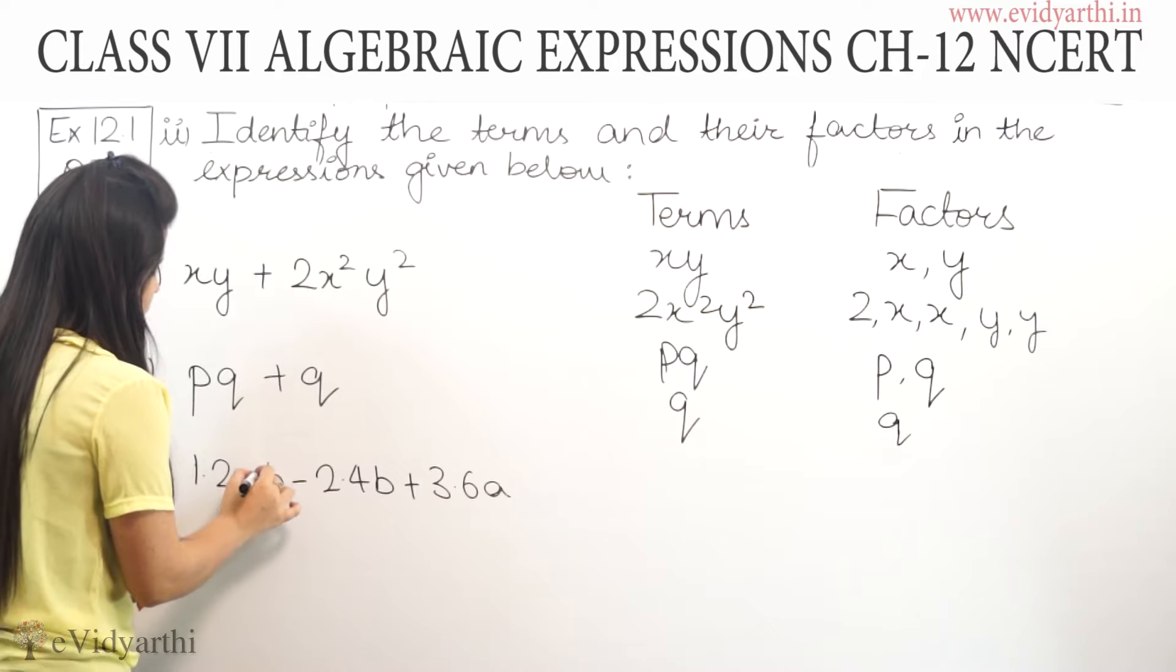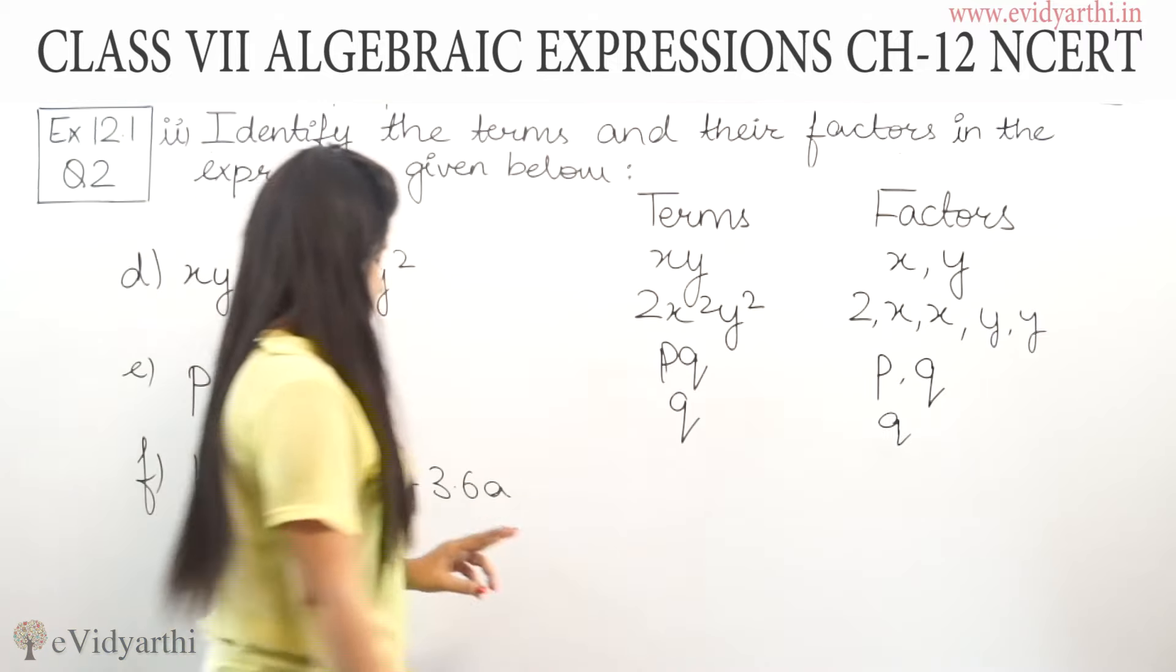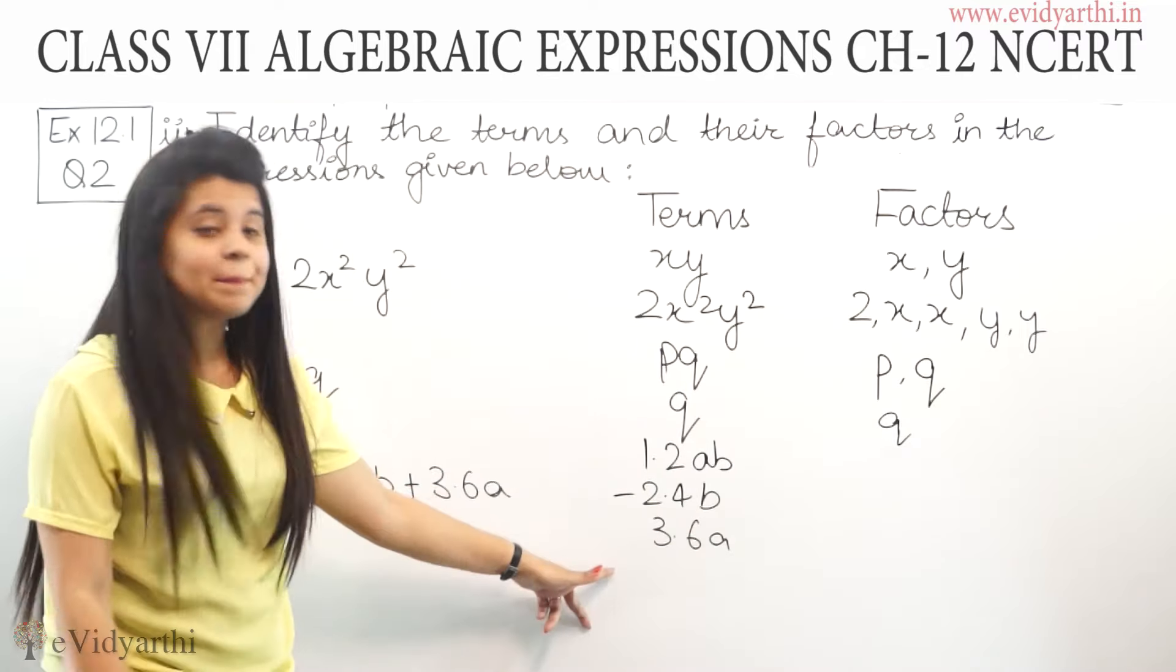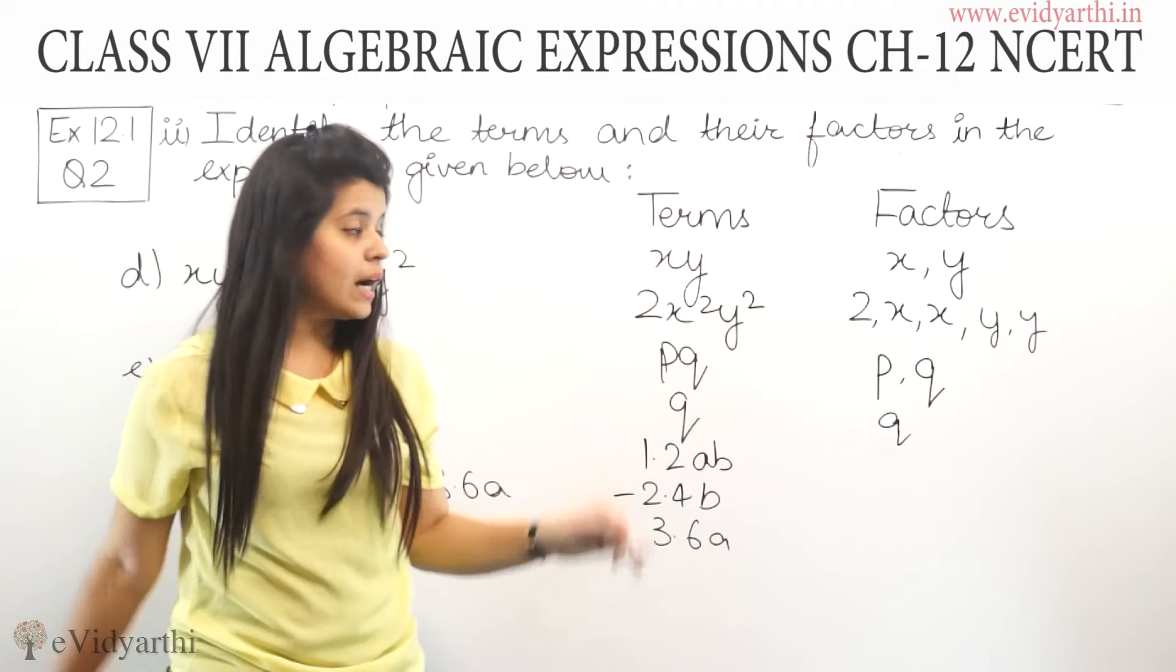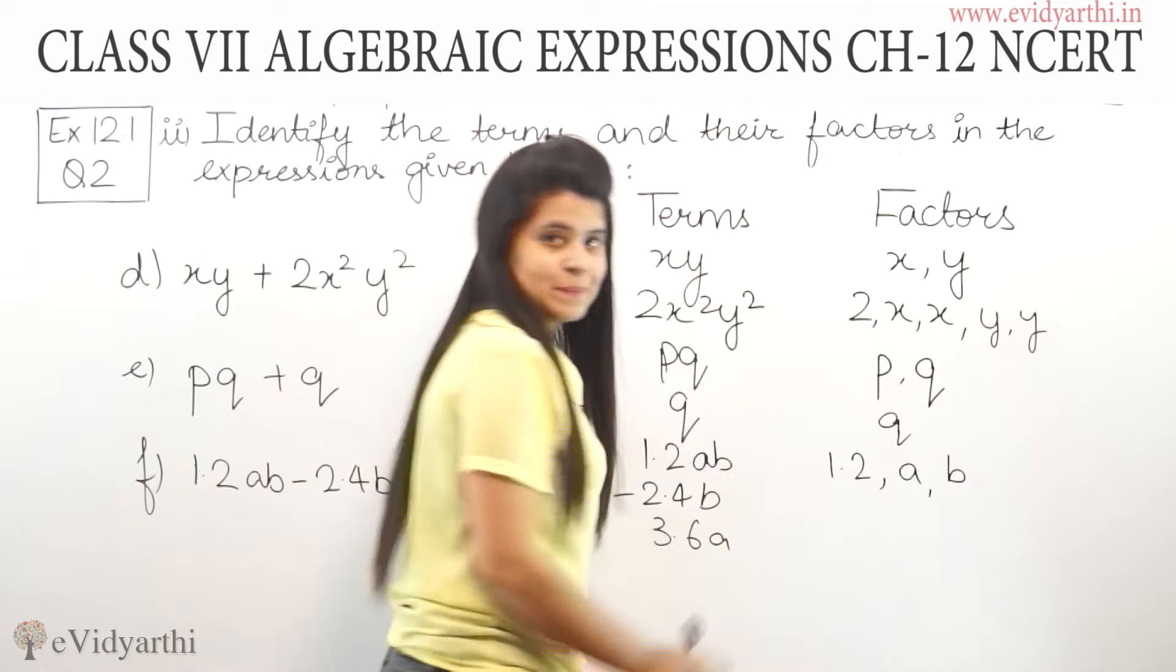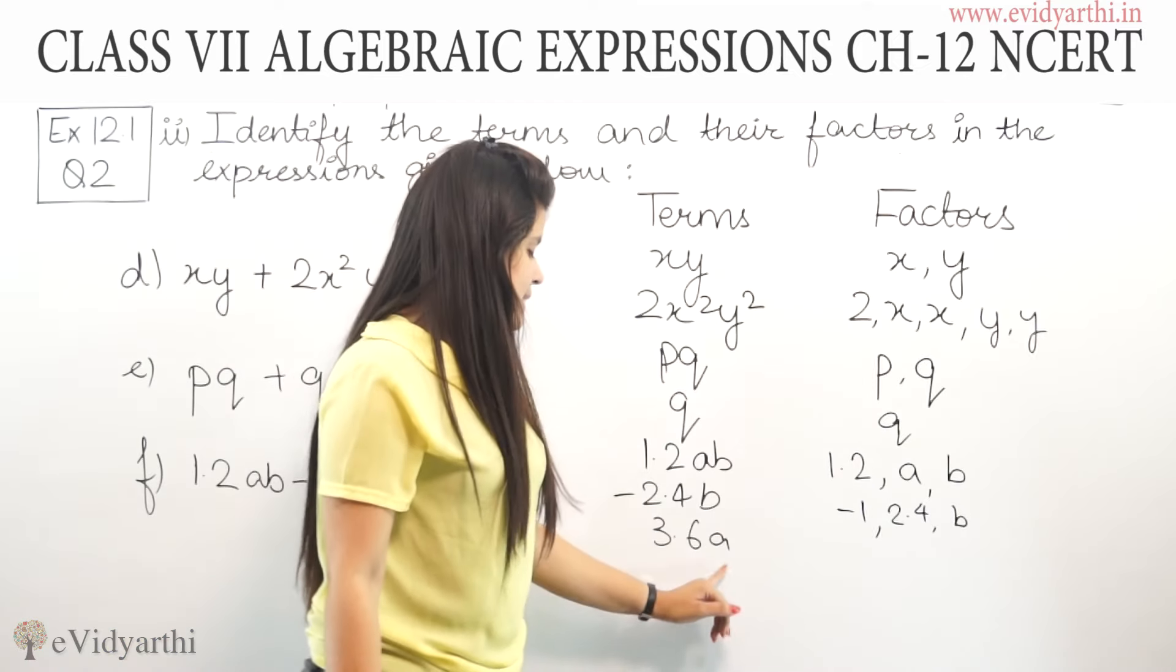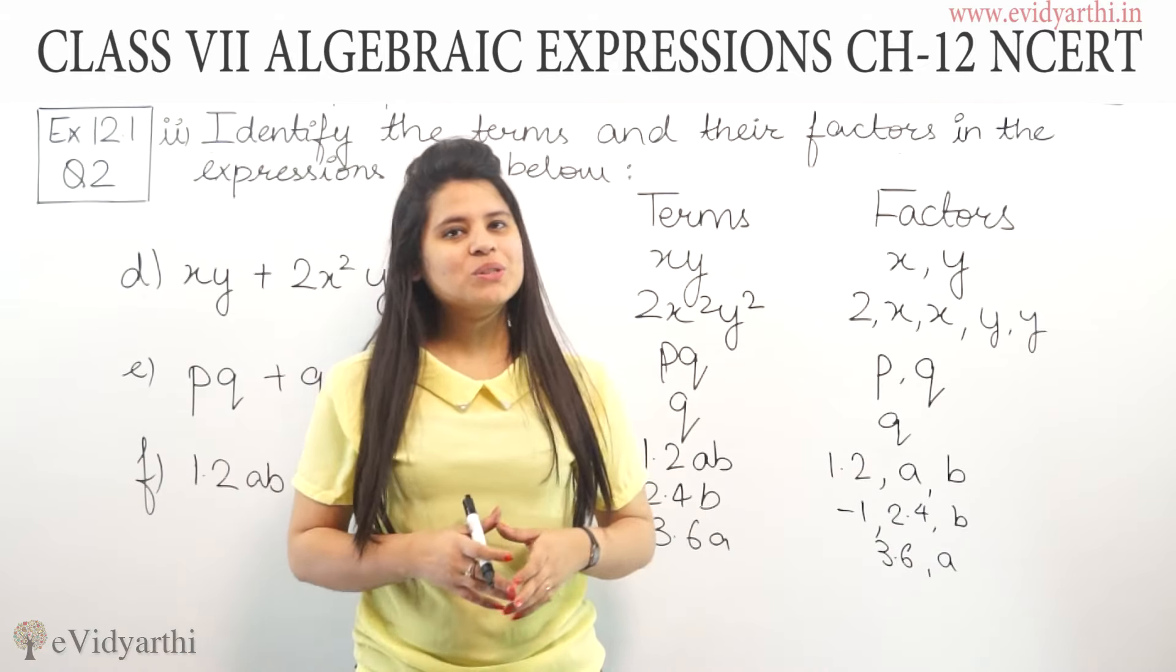For part f, we have 1.2ab - 2.4b + 3.6a. Here, there are three terms: 1.2ab, -2.4b, and 3.6a. For the factors, we treat 1.2 like a regular number. Just as we had 2 in 2x²y², here we have 1.2. So, the factors of 1.2ab are 1.2, a, and b. For -2.4b, the factors are -1, 2.4, and b. For 3.6a, the factors are 3.6 and a. This completes part f.